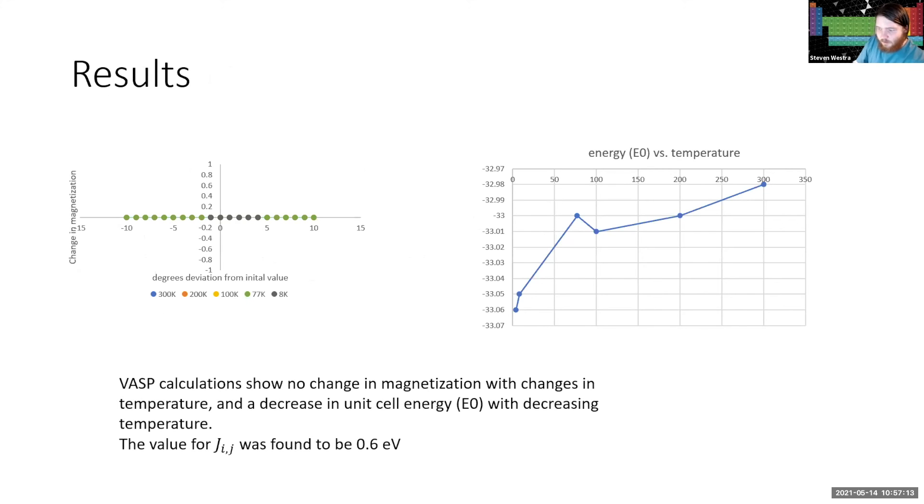Results. So the VASP calculations showed no change in magnetization with change in temperature and an overall decrease in unit energy with decreasing temperature. The bump that you will see on the graph on the right here is the calculation for liquid nitrogen. And from this, we found that the value we were getting for J was 0.6 electron volts, which I will discuss further later.